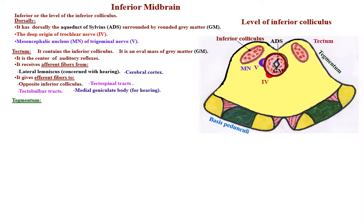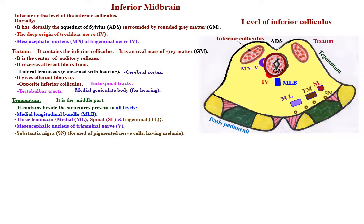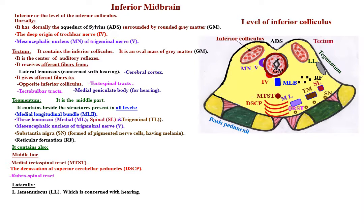The tegmentum, which is the middle part of the midbrain, contains in addition to the structures present in all levels: the medial tectospinal tract and the decussation of superior cerebellar peduncles in the midline. More laterally, there is the lateral lemniscus, which is concerned with hearing.